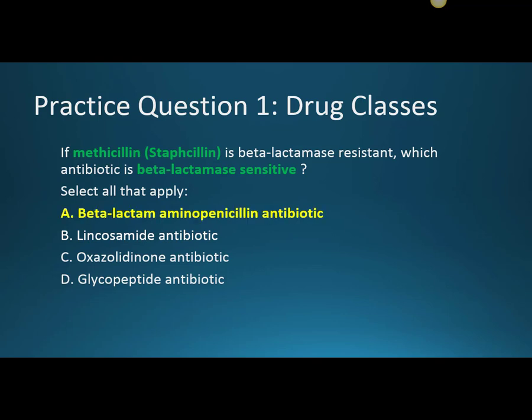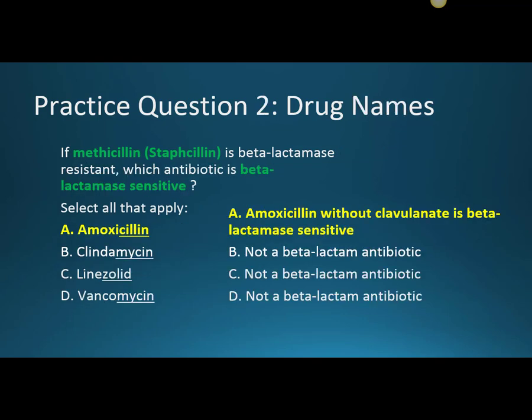The beta-lactam aminopenicillin antibiotic amoxicillin is beta-lactamase sensitive. Looking at drug names for the exam: amoxicillin without the clavulanate, or without the clavulanic acid as in Augmentin, would be beta-lactamase sensitive. Clindamycin, linezolid, and vancomycin are not beta-lactam antibiotics, but vancomycin does affect the cell wall — as do penicillins and cephalosporins — just in a different way. The reason vancomycin works where penicillins fail is that it doesn't use the penicillin-binding proteins as its mechanism of action; it uses an alternate mechanism disrupting the bacterial cell wall.